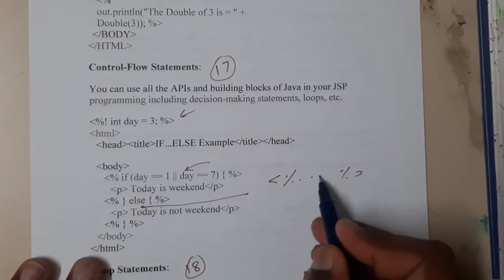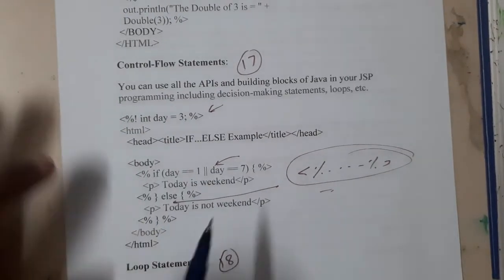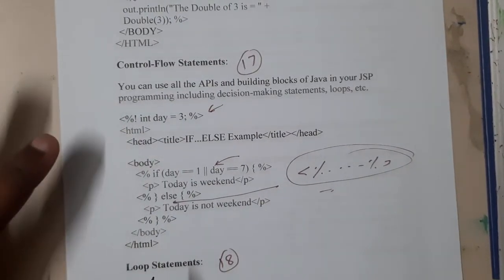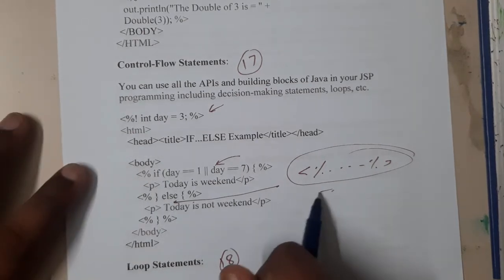If you observe wherever you are writing Java code, so this condition checking, this else, these both come under Java code. So those are enclosed between these things. If you observe carefully, that is how the control flow or any kind of JSP file is written.